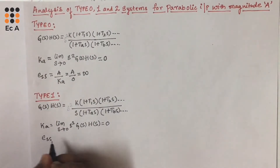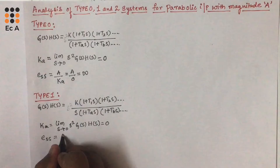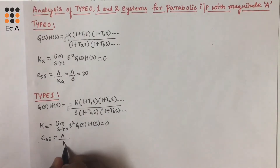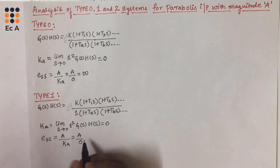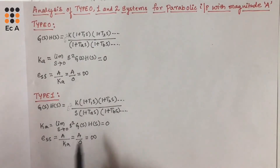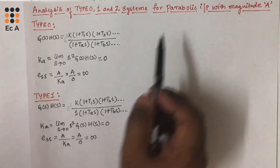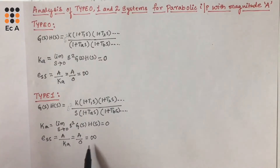The steady-state error for a parabolic input is given as A divided by Ka. The value of Ka is 0, so we can write A divided by 0, which is infinity. Therefore, the steady-state error for type 1 system with parabolic input is infinity.